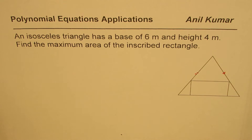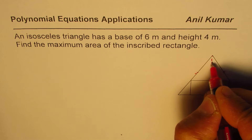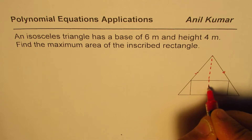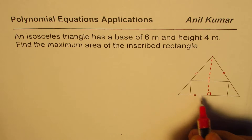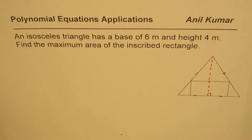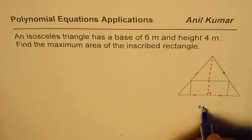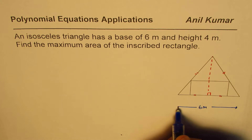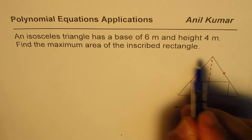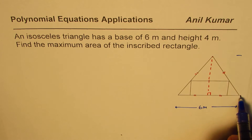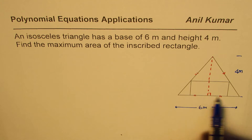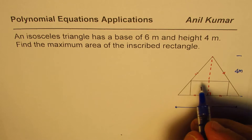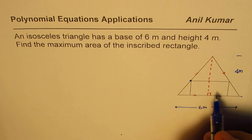To begin with, let me drop a perpendicular from the vertex. Since this is an isosceles triangle, this perpendicular is going to divide the base into two equal parts. We are given that the base is 6 meters and the height is 4 meters. We need to find the maximum area of this rectangle.